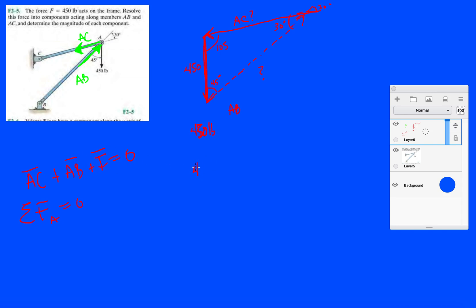We're going to do 450 over sine of the angle opposite to that side. 450 over sine 30 equals AC over sine 45. That'll give us a result of 636.4 pounds.